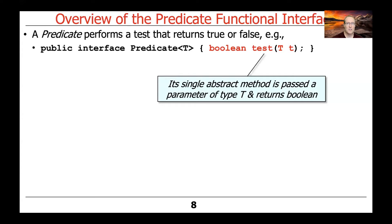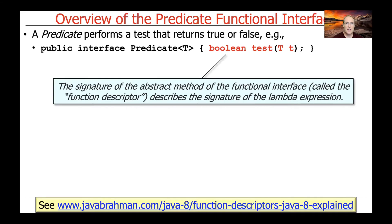The test method returns true or false — very simple, there's only a single method. The signature of this abstract method of the functional interface is called the function descriptor, and it essentially describes the signature of the lambda expression. This particular functional interface can provide the type whenever you have a lambda expression that takes a parameter of type T and returns true or false.